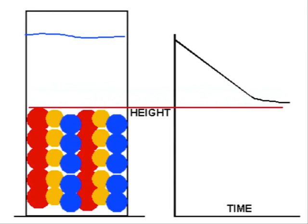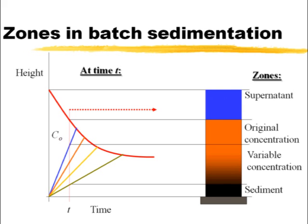And this is the illustration of the zones that occur. There's the interface plot on the left-hand side now, and if we take a fixed point in time, the zones are shown on the right. There's the supernatant, the clear liquid, the original concentration zone, variable concentration zone, and then sediment at the bottom. And that's at a fixed position in time, T.